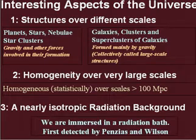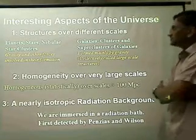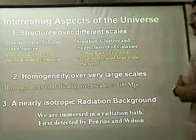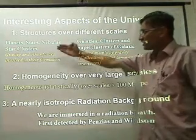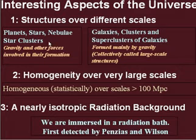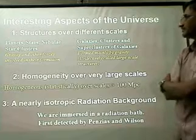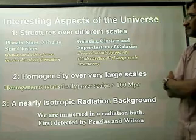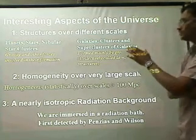There are three very interesting aspects about our universe. The first is that we see structures over different scales. We have planets, stars, nebulae, star clusters, and on much larger sizes we have galaxies, clusters of galaxies, superclusters of galaxies and large objects. There is a certain difference in the physics of the formation of these two classes of objects.